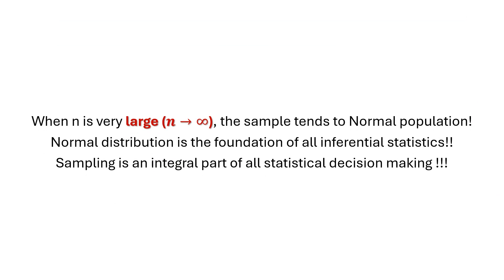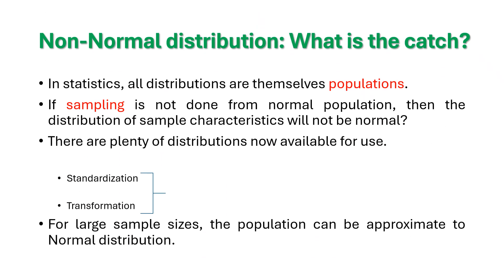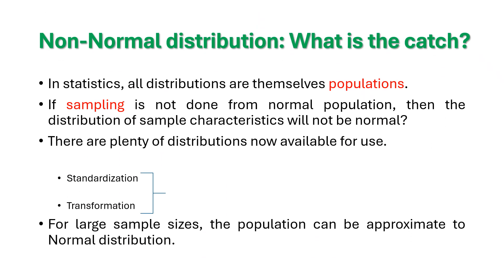When n is very large, the sample tends to normal population. Normal distribution is the foundation of all inferential statistics, we have already mentioned it. And sampling is also an integral part of all statistical decision making. The more the sample, better the conclusion is going to be. If you are slowly and gradually, you will be approaching to the normal distribution.